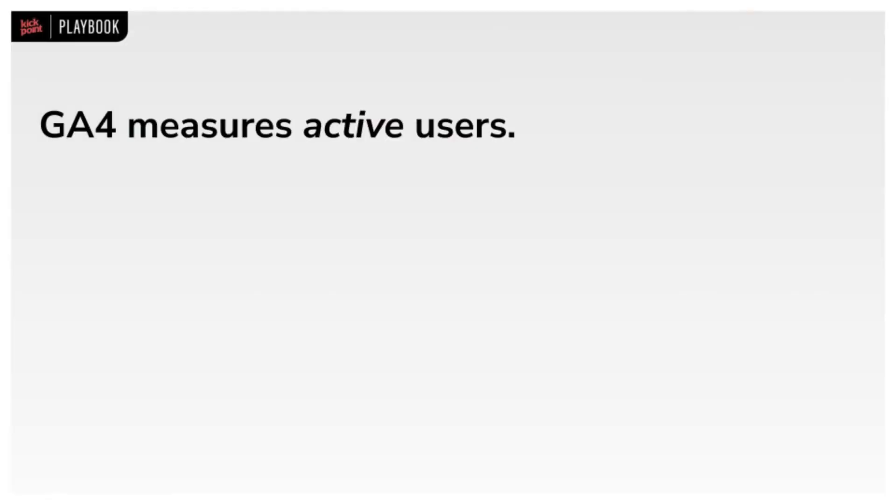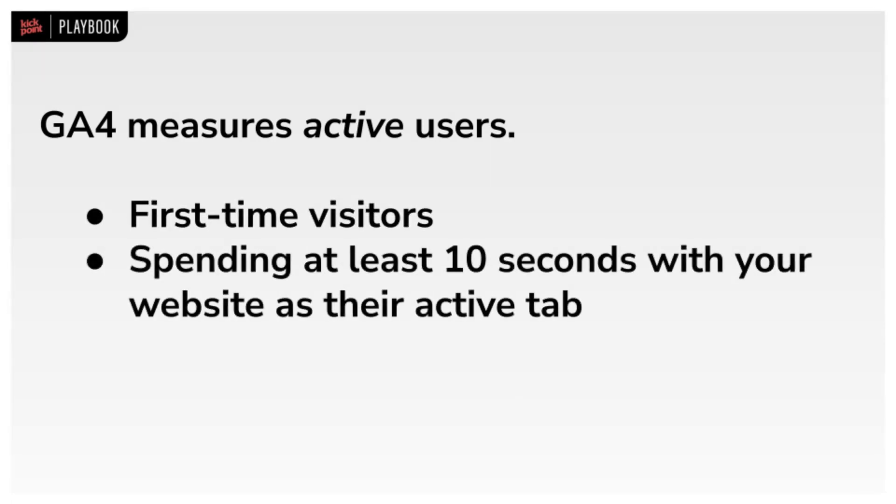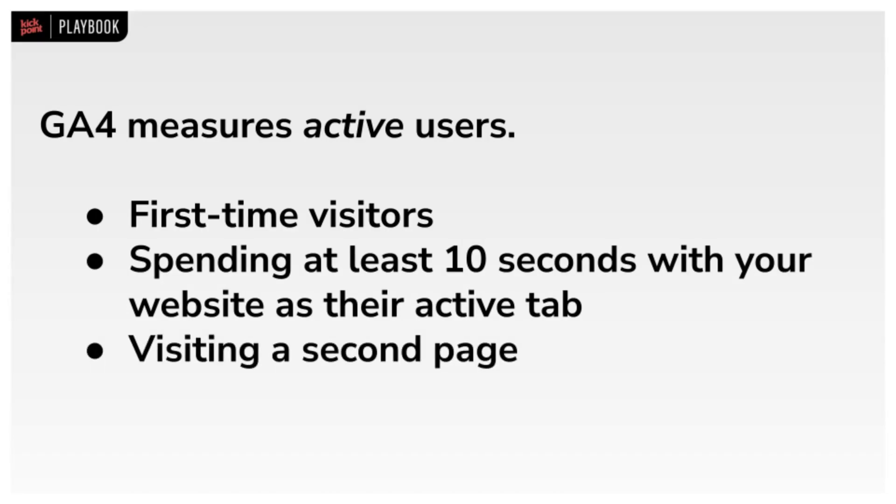UA counted everyone as a user, period. Which meant you ended up with weird situations, like when you have 50 tabs open and reactivated your browser after your laptop went to sleep. Each of those browser tabs would send a 'you still there' message to the website, and UA would dutifully record that check-in as a user with a zero-second page view, even though you didn't look at the tab. In GA4, they've tried to get rid of this issue. When you see users in GA4, what they're counting are active users — people who are engaged. Active users are those visiting your website for the first time, spending at least 10 seconds with your website as their active tab, going to a second page, or converting. If 10 seconds seems a little short, you can adjust that in the settings.